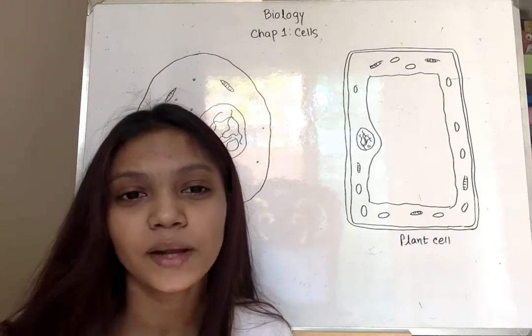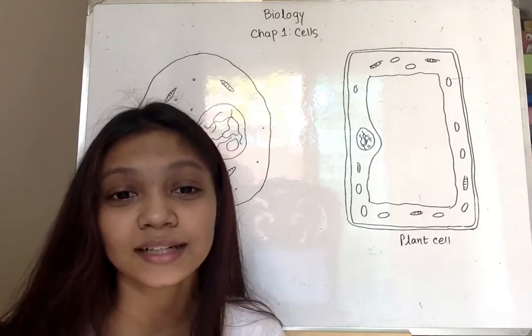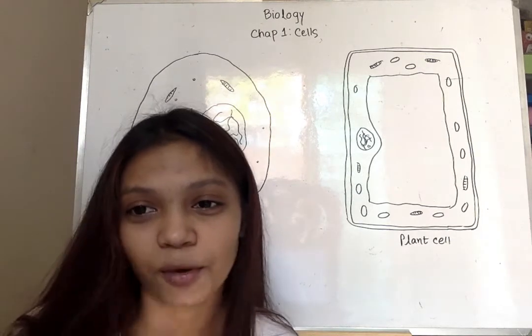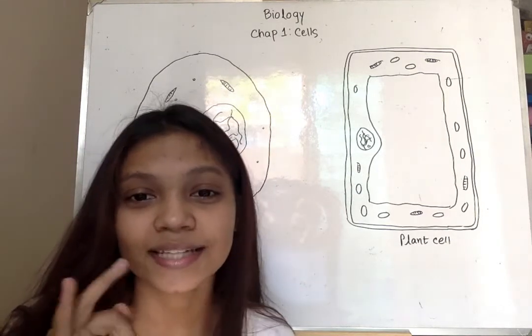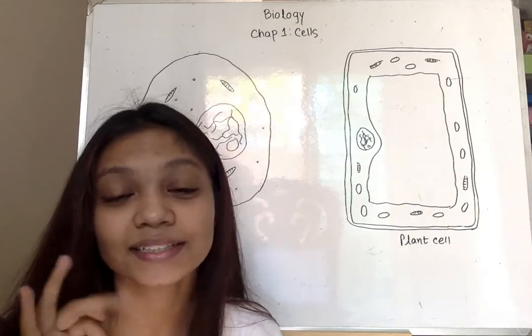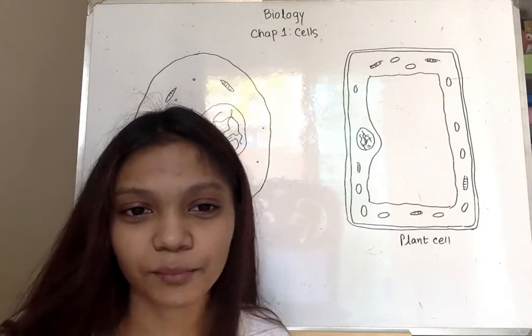The protoplasm of a cell consists of three parts: the nucleus, cytoplasm, and cell surface membrane. Now let's look at these three components in more detail.